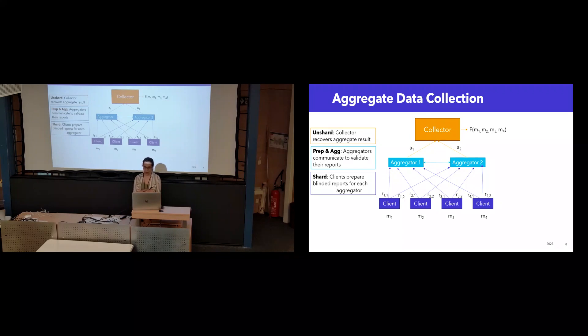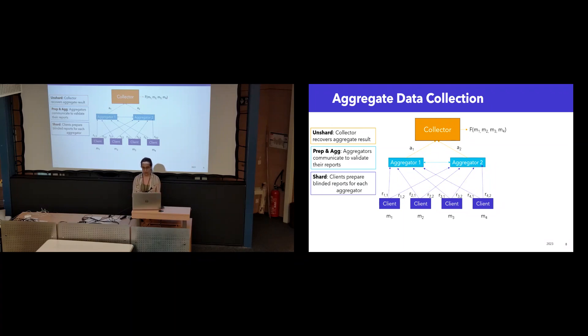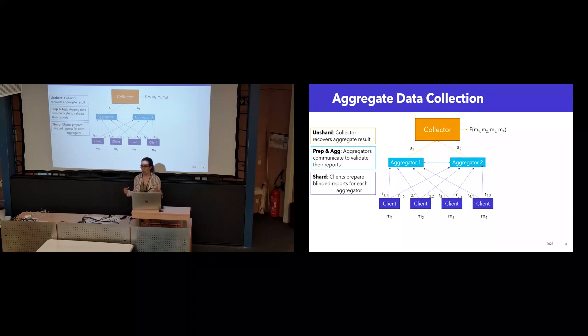Then the aggregators locally aggregate all of their individual reports and share the result with the collector, who then unifies the reports from each aggregator in order to recover the final aggregate result. Notice in this talk I'm going to be talking about two aggregators, but in certain cases we can look at more than two aggregators and the framework does extend to that.